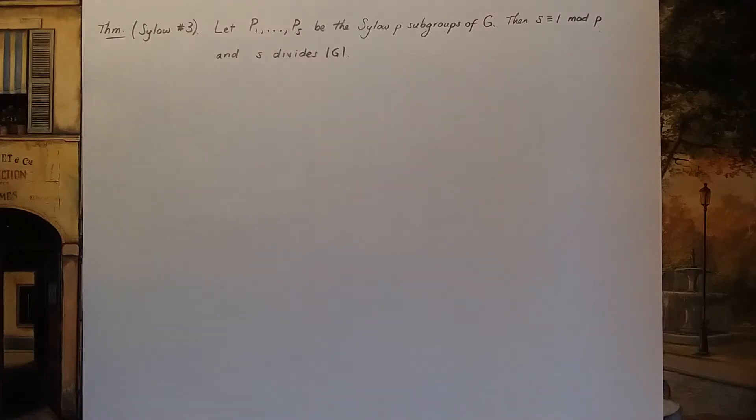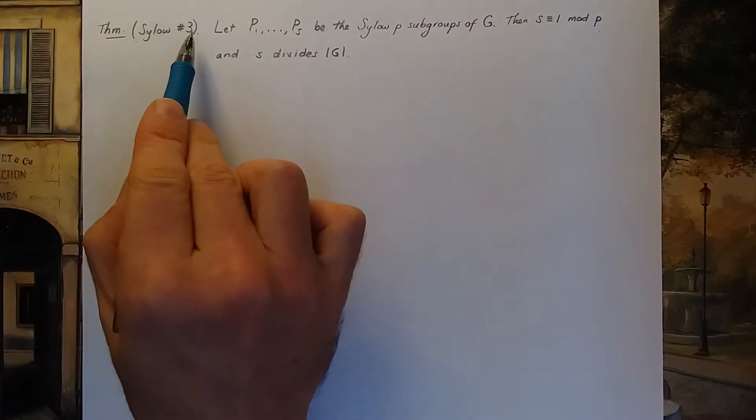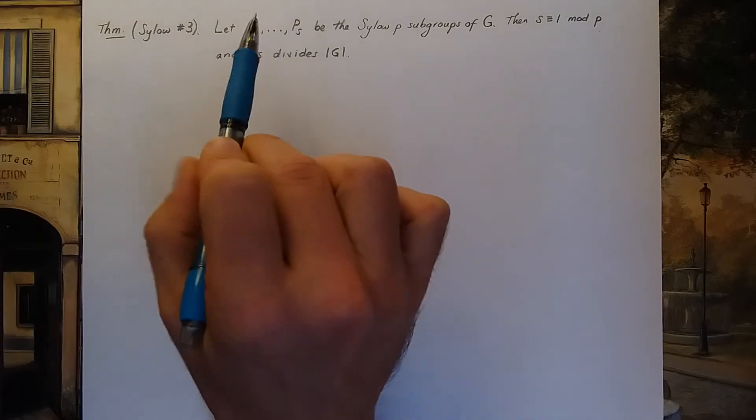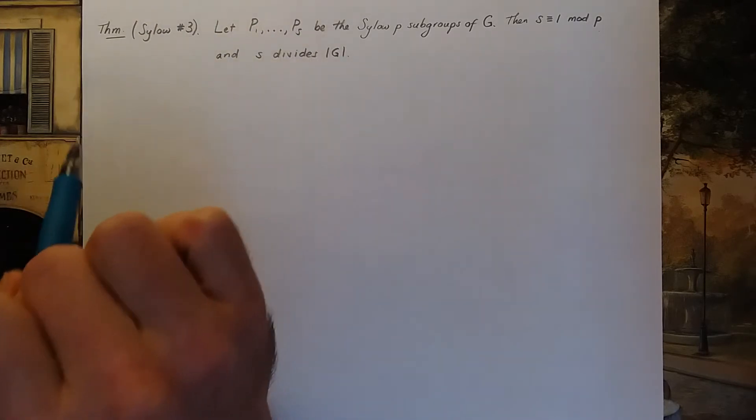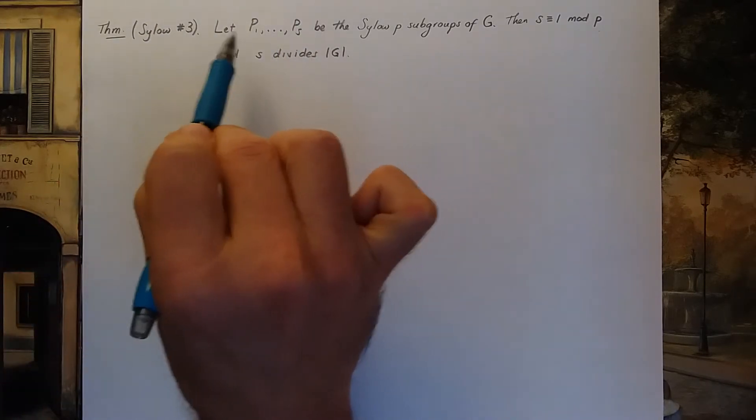The last CELO theorem is CELO theorem number three. It's pretty powerful as we'll see in our next example. It says this: